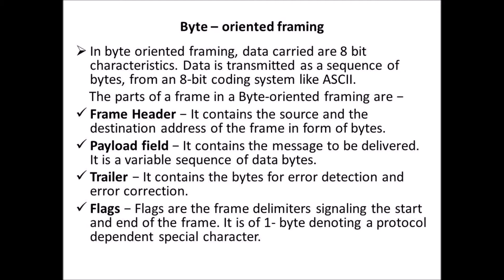The third part is the trailer. It contains bytes for error detection and error correction. The fourth part is flags. Flags are the frame delimiters signaling the start and the end of the frame. It is one byte denoting a protocol-dependent special character.